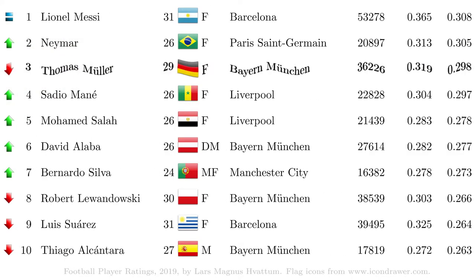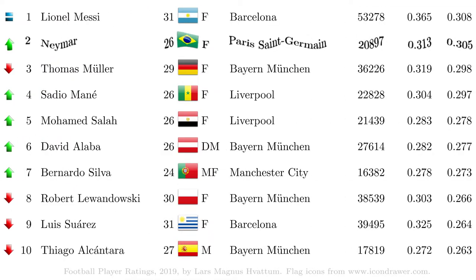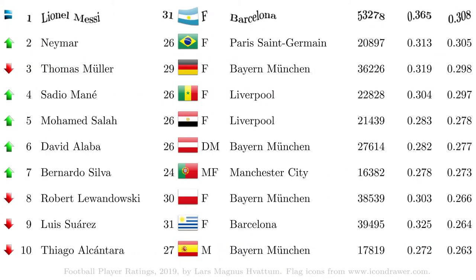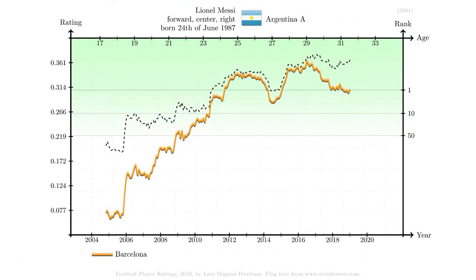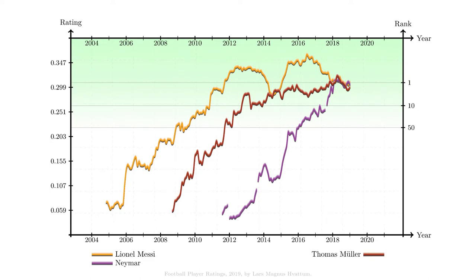The players in the top three are Thomas Müller, who drops down from second place to third place; Neymar, who climbs from number 10 to number 2; and Messi, who keeps his number 1 status for one more list. If we look a bit more closely at the comparison of the top three, we can see that it is closer than for a long time. It is interesting that Messi has had two periods of declining ratings — once in 2014 and once in 2017 — where he has not yet bounced back from the latter. Perhaps we are seeing the beginning of the end of an era.